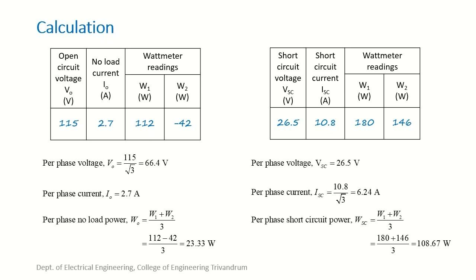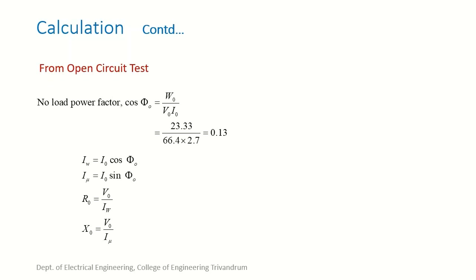In the short circuit test, the per-phase voltage is 26.5 volt, taken as-is since the primary is delta connected. The per-phase current is line current divided by √3, and the per-phase short circuit power is total power divided by 3. From these, we first find the no-load power factor cos phi 0 as power divided by voltage times current, giving a value of 0.13. This is used to find Iw, Imu, R0, and X0, which are the equivalent circuit parameters.